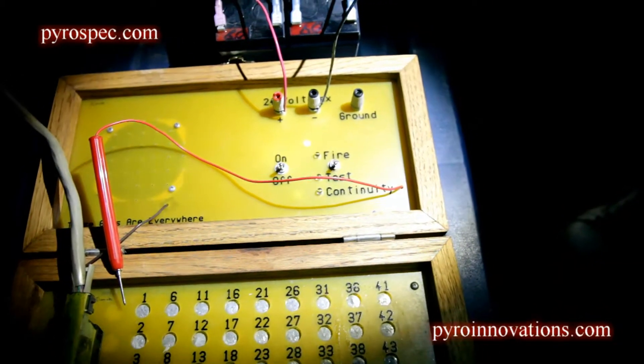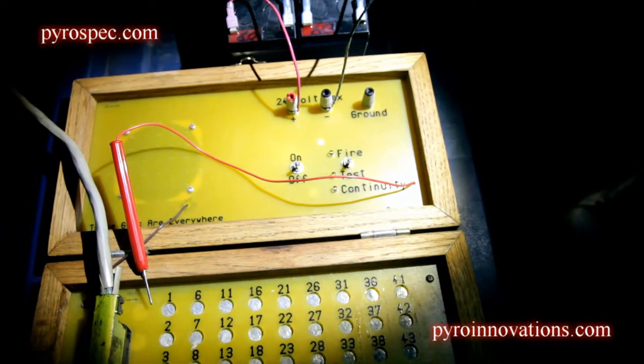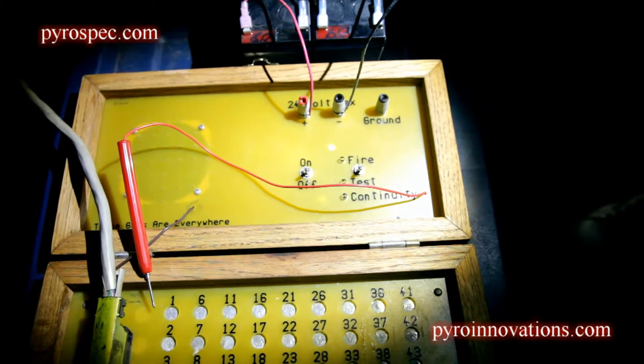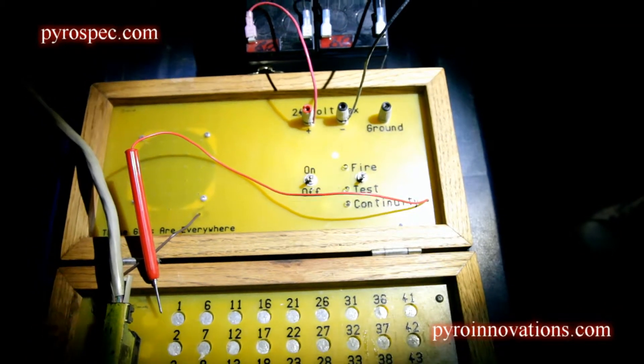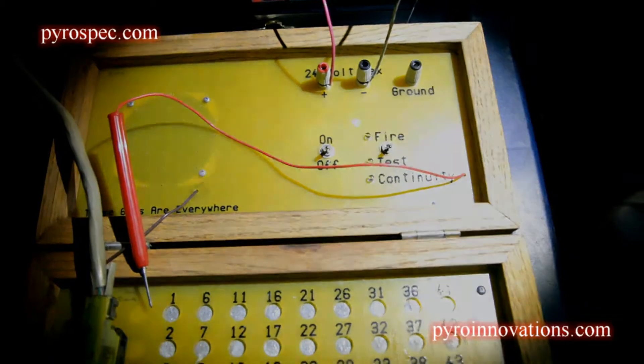The operator's responsibility during the show is to not only keep watch on the shooter who's firing the display, but also keep an eye on the fireworks themselves as they go off to ensure there are no malfunctions that may require stopping the display, and to make sure nobody's breached your firing perimeter.